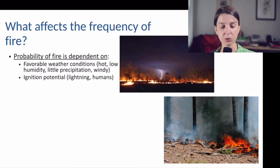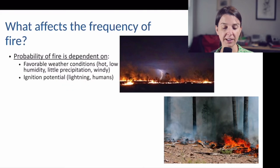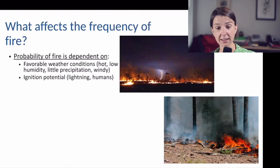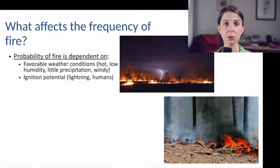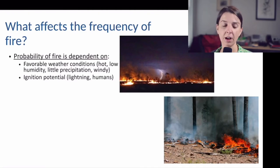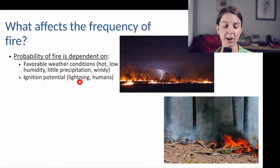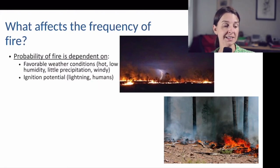Depending on where you are, there are different sources of ignition. Naturally, the most common form of ignition is lightning strikes. In systems like the boreal forest and even the Arctic, lightning is the main cause of fires. However, as we have many people living on Earth, in many places most fires are now ignited by humans — often not on purpose.